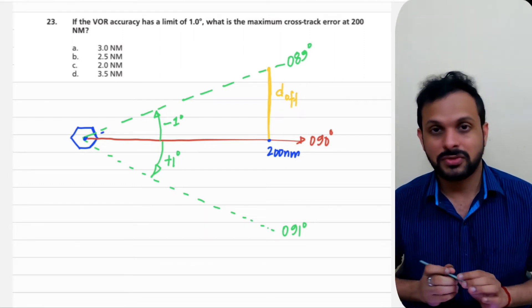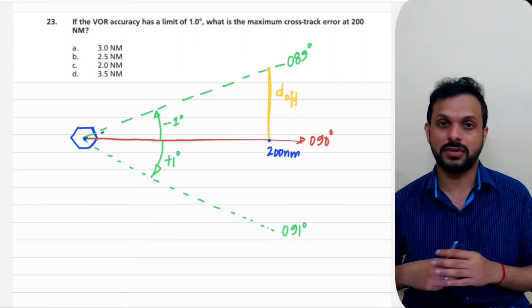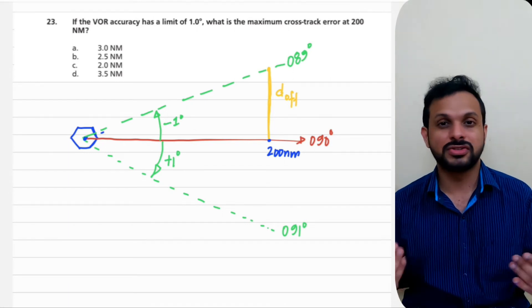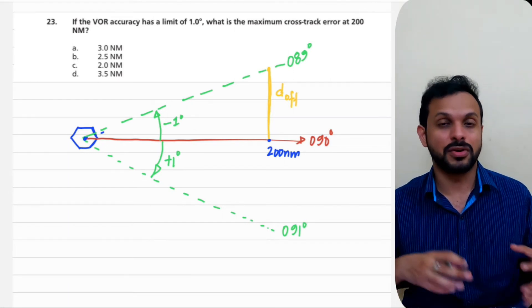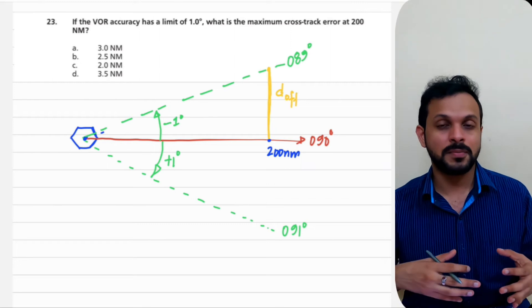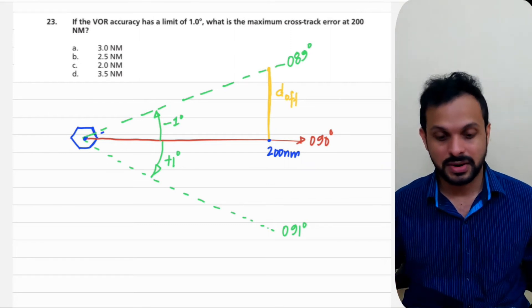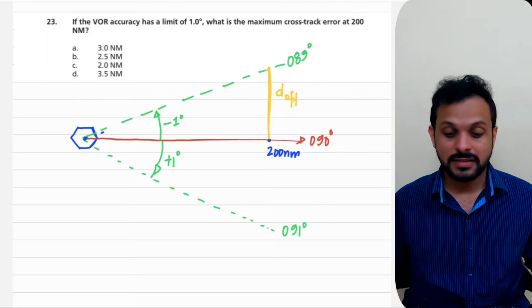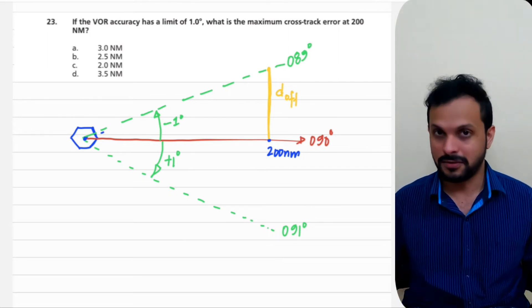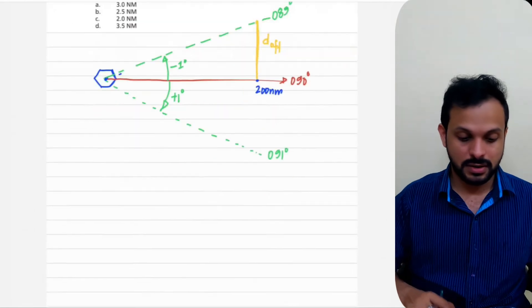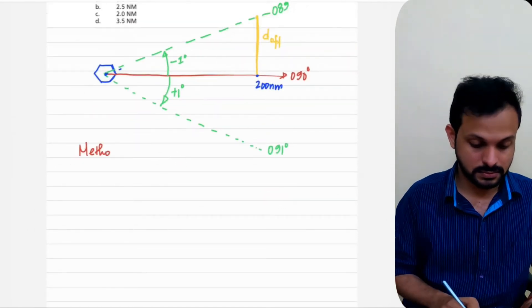I'm going to try this question using two different methods — one using the basic trigonometric method, and the other using the famous 1-in-60 rule. Let's find the answer using both methods and compare them. We'll start with trigonometry first.